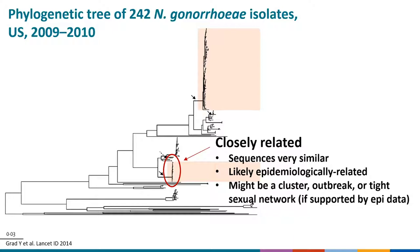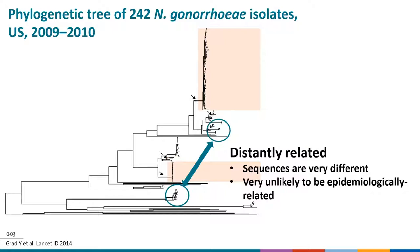Part of the power of genomic analysis is that it approximates epidemiology. Closely related sequences are likely epidemiologically related, especially if occurring in a sexual network or specific geographic location — this might represent a cluster or outbreak with recent transmission events, suggesting people may be part of the same sexual network. However, some discernment is needed, because occasionally isolates may cluster genomically but not be epidemiologically related at all. Conversely, distantly related sequences are very unlikely to be epidemiologically related.